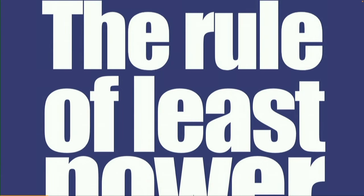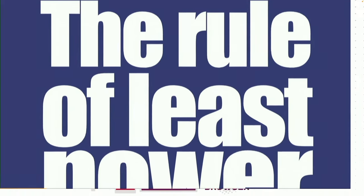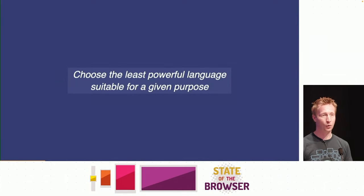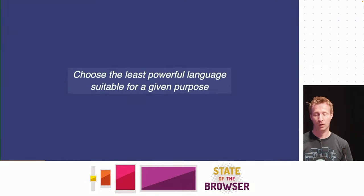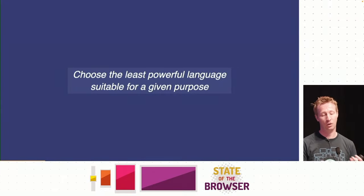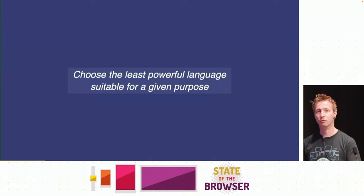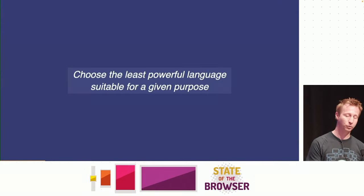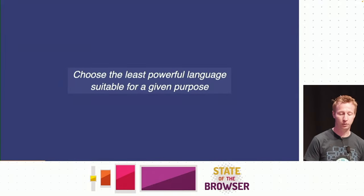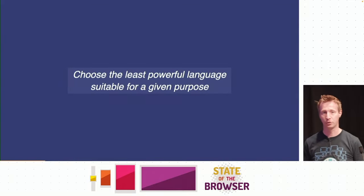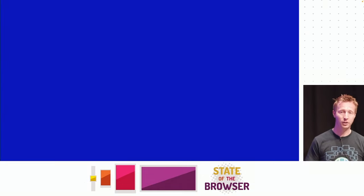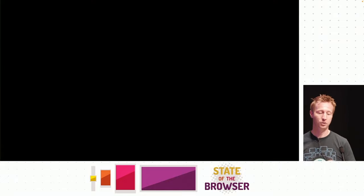The Rule of Least Power is one of the core principles of web development. It means that you should choose the least powerful language for a given purpose. On the web, this means preferring HTML over CSS and CSS over JavaScript, because your JavaScript can break, it can fail to load, it takes extra resources to download and run, and it can exclude keyboard users and people using assistive technologies if you don't do it right.